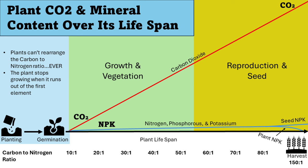Herein lies the problem. Our fertilizer industry wants us to look at only nitrogen, phosphorus, and potassium as the components that grow this crop. When in reality, it is carbon dioxide that is at an average of 30 times more than the nitrogen, phosphorus, potassium, and sulfur requirements. 30 times more.